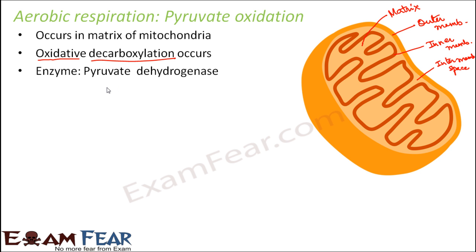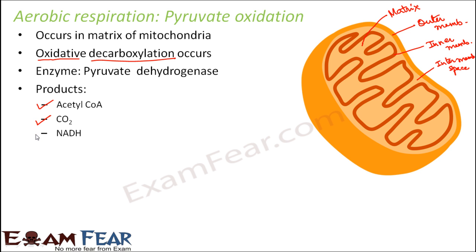Whenever dehydrogenase is present, it will cause oxidation. The products formed as a result of this step are acetyl coenzyme A, carbon dioxide, and NADH. So these are the products formed in this step.